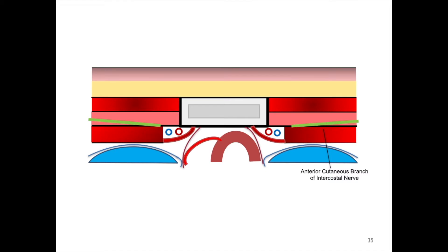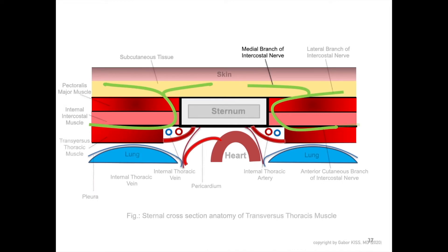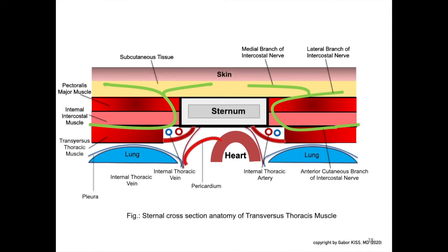Anterior cutaneous branches of the intercostal nerve pass inside the transverse thoracic plane, then continue through the internal intercostal and pectoral muscle, further into the skin, with the lateral branch of the intercostal nerve branching from the medial branch. In summary, this slide shows the sternum cross-section anatomy of the transverse thoracic muscle in relation to its surrounding structures.